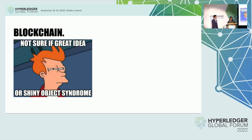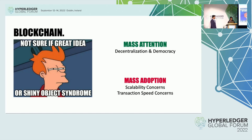Blockchain has been gaining a lot of attention because of two main aspects: decentralization and democracy. But there are real concerns regarding mass adoption. We still have a long way to go before we reach a stage where we say, without blockchain, how do you achieve this? There's no other way. To achieve a state where blockchain becomes the norm, the main bottleneck is scalability concerns, which relate to transaction speed. Scalability is directly linked to how many transactions we're able to process in a given timeframe.